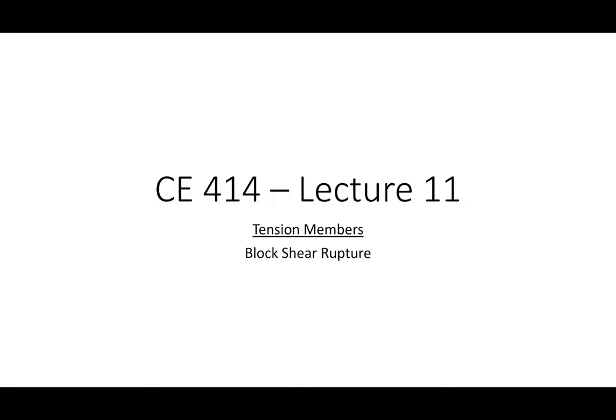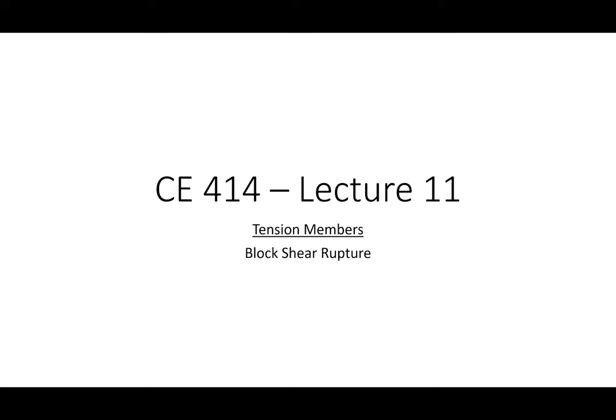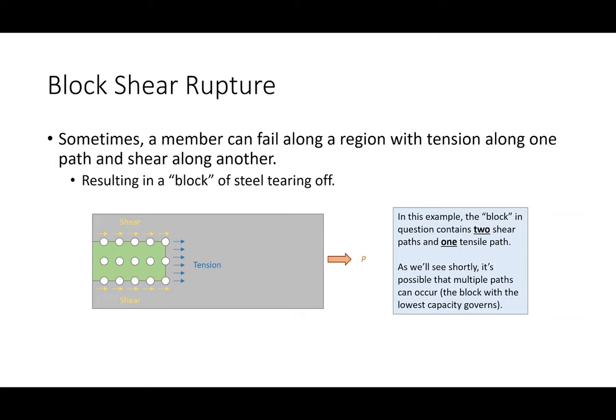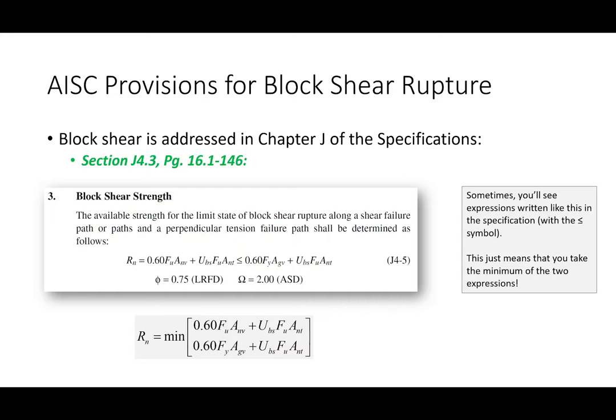I'm going to go through this part kind of quickly because I covered it in good detail last time, but the focus of today's lecture is block-shear rupture. Block-shear rupture is a phenomenon where you have a combination of tensile failure and shear failure, and you get a chunk of the connection — a block of steel — that tears off. We call it block shear because while it is a failure associated with tension members, it only happens when there's some presence of shear inside the failure region.